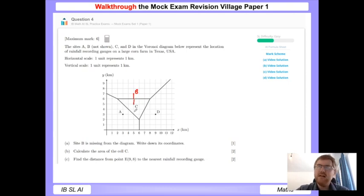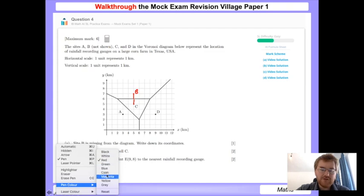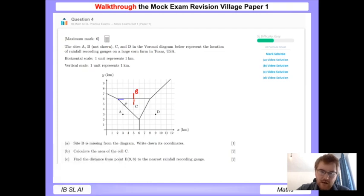For part B, we need to calculate the area of cell C. We have a triangle here. The formula for the area of a triangle is half base times height. Our base will be this length here, our perpendicular height will be this height here. We don't need to go any more complicated for this question.